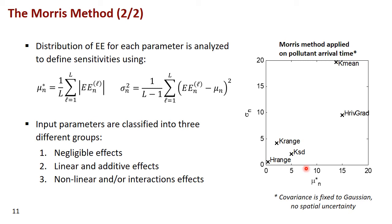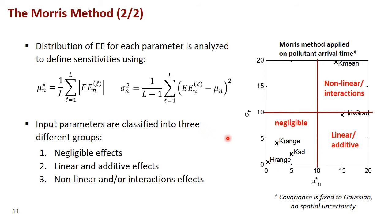We can then rank the mean versus the variance of the elementary effects. Typically, we partition this space: low mean means the parameter is negligible, while high variance indicates possibly a non-linear effect or interactions — although we can't really distinguish between the two. In our particular case, similar to the OAT analysis, we see that a number of parameters are not actionable. However, k-mean is important and also seems to have either an interaction or some non-linear effect. The hydraulic gradient in the groundwater system is also an important parameter.